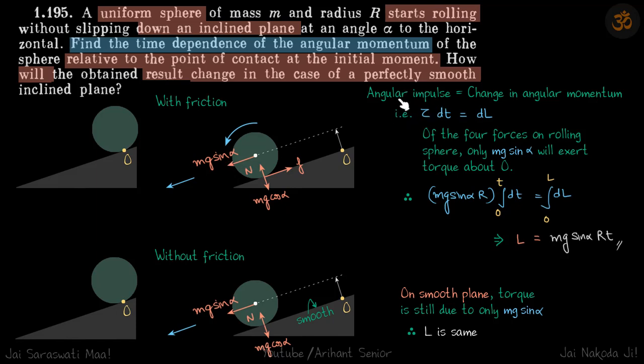Now we can directly say that angular impulse is change in angular momentum, or tau dt equals dL. Of the four forces on the rolling sphere, only Mg sin alpha will exert torque about O. The torque will be Mg sin alpha times this distance, which is R.